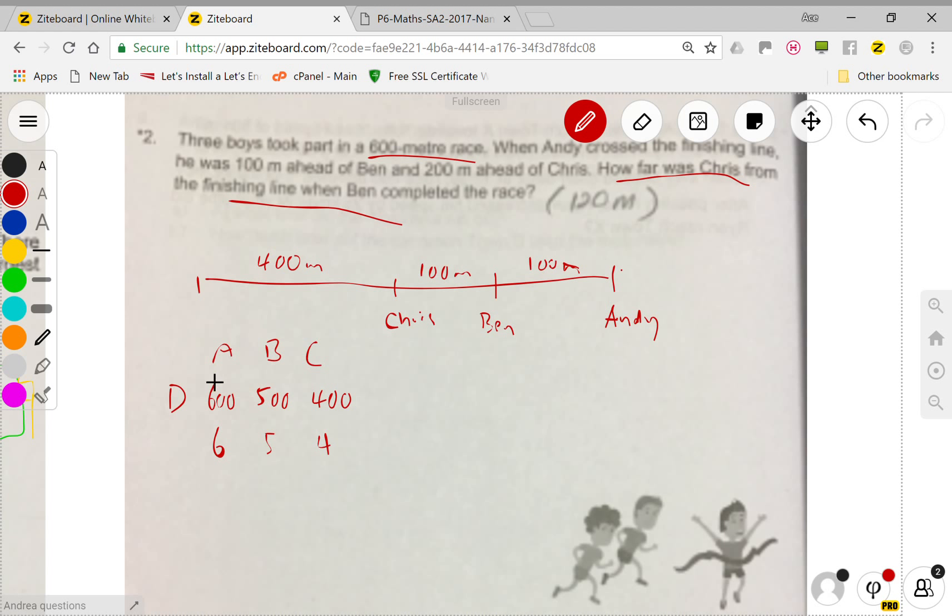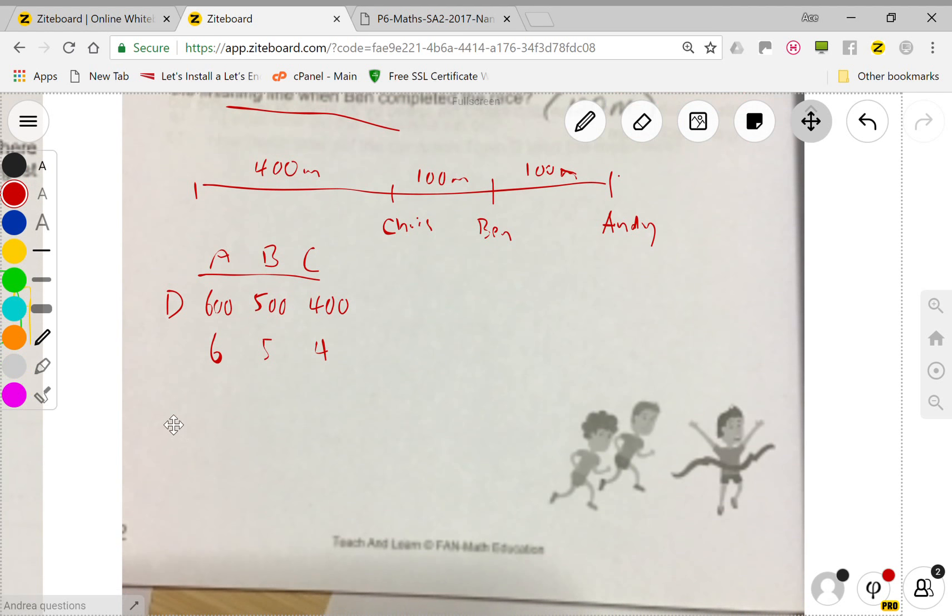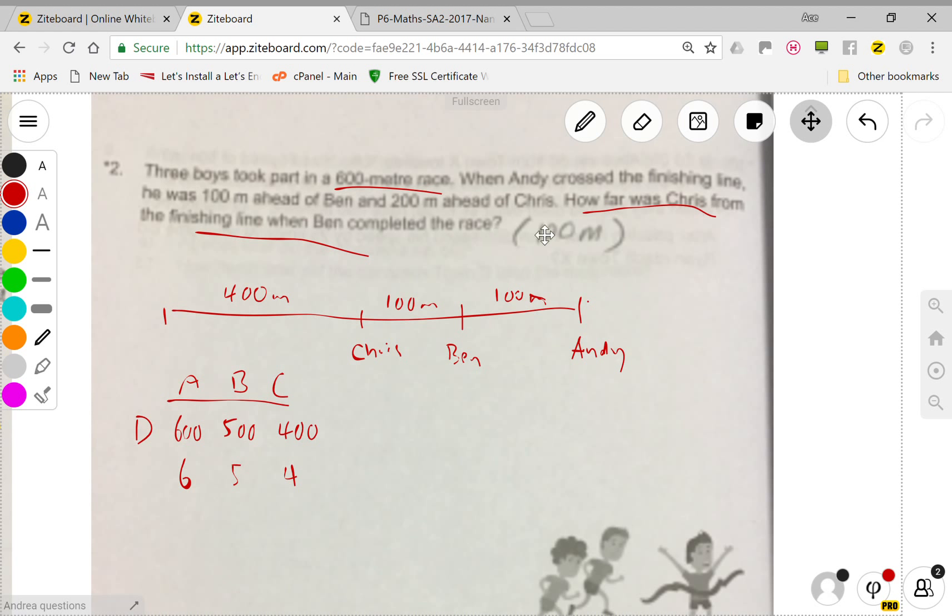This is the distance ratio. We can actually deduce speed and time as well, but for this question we don't need to because they're asking how far Chris was from the finishing line when Ben completed the race. So we just look at the distance between Ben and Chris.